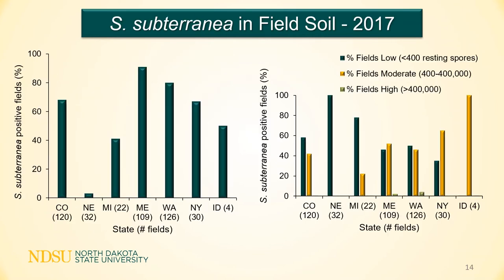Powdery scab is spread throughout potato growing regions. These graphs represent the distribution by state; the numbers in parentheses at the bottom are the number of fields from each state that were evaluated. On the left, in most states, greater than 50% of fields are infested with the powdery scab pathogen. On the right, the level of pathogen in the soil is shown, where green bars are low and yellow bars are moderate. In most states, more than 40% of fields have that moderate level of infestation.